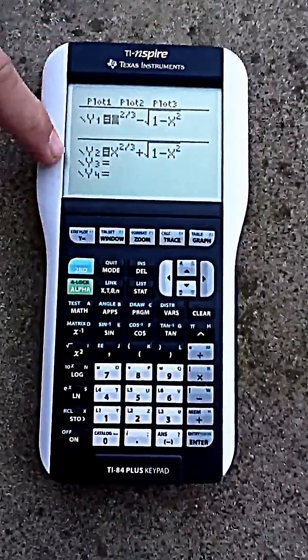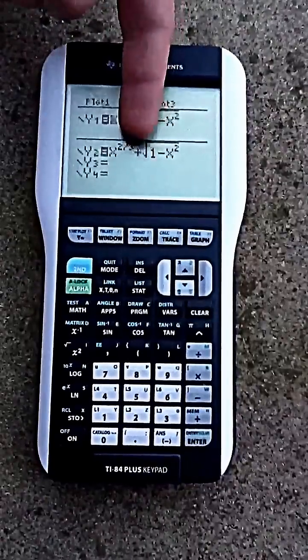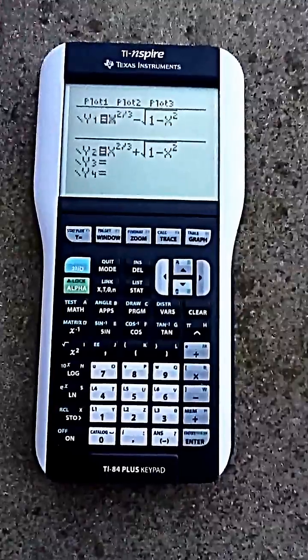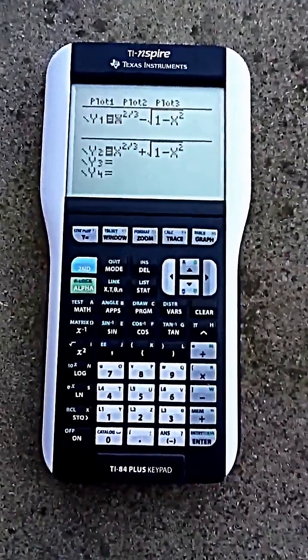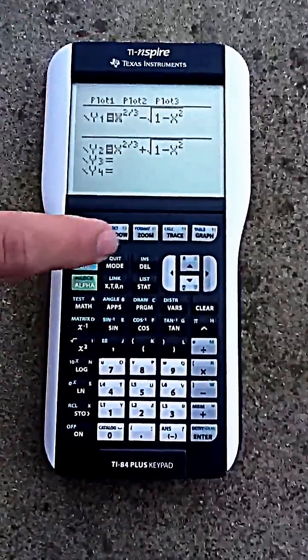And then you're going to type it again, but instead of having minus, you're going to make it a plus. So then they're opposites, so you'll later see what that does to the graph. Once you have that ready, you do second quit.